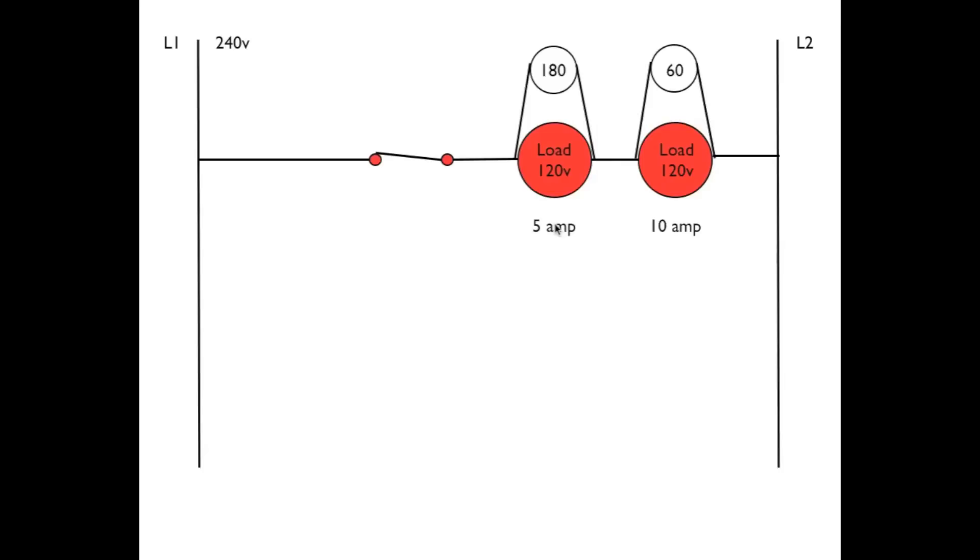The larger load is going to have a smaller voltage drop. Remember, we've got 240 volts here. That means the smaller load is going to get 180 volts and the larger load is going to get 60 volts.